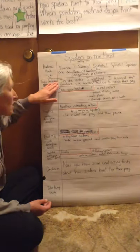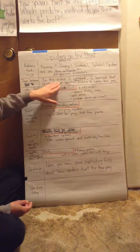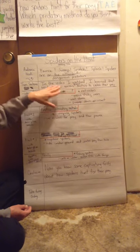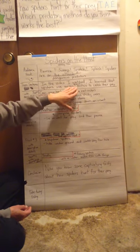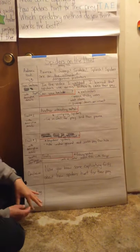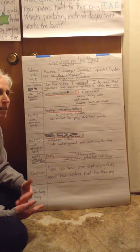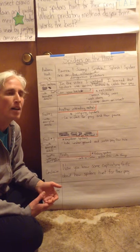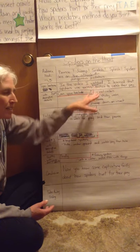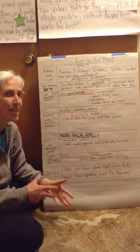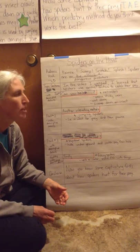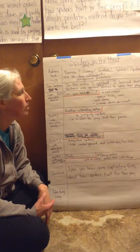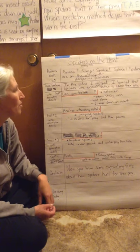Then I've got a solid topic sentence — in the video I watched, telling the source where I got the information. I learned that spiders use various unusual tactics to catch their prey. Already I'm trying to use good vocabulary. Instead of just saying various ways, I'm putting a good word like tactics to show they have techniques and strategies. Great writers use good vocabulary in order to really enhance the images that come from their writing.